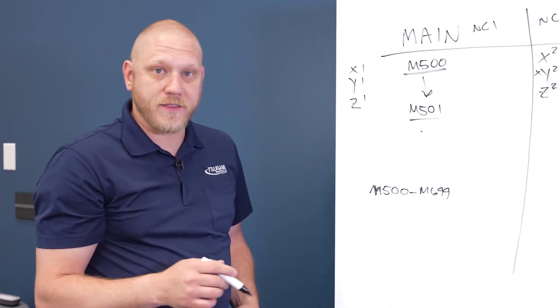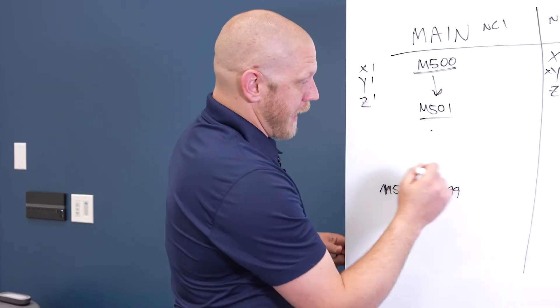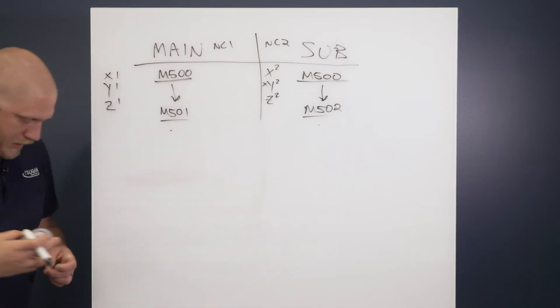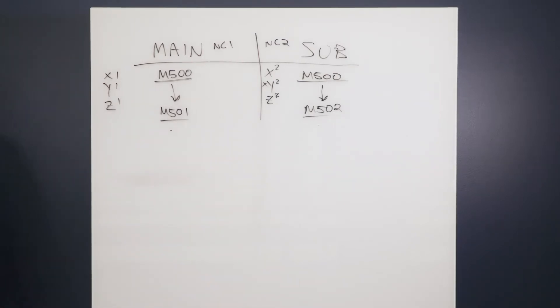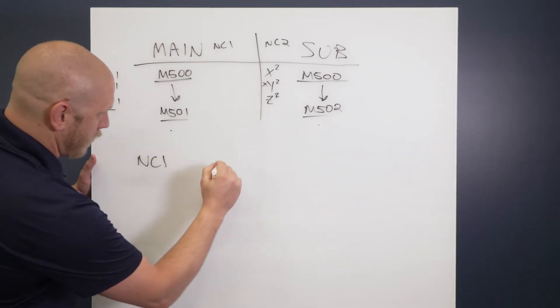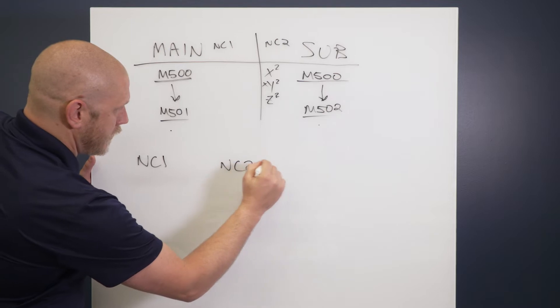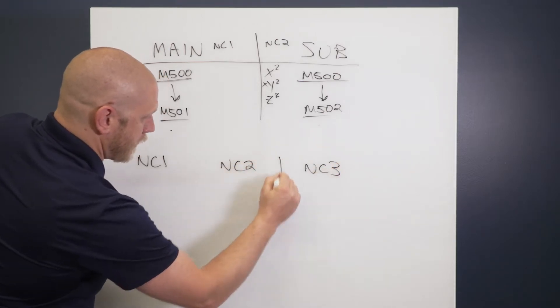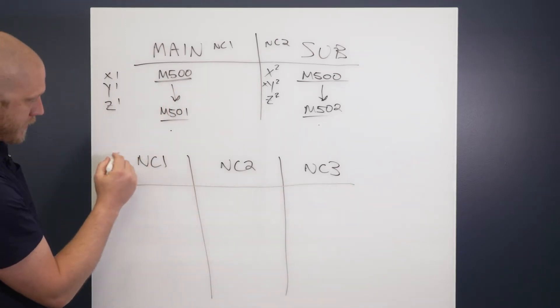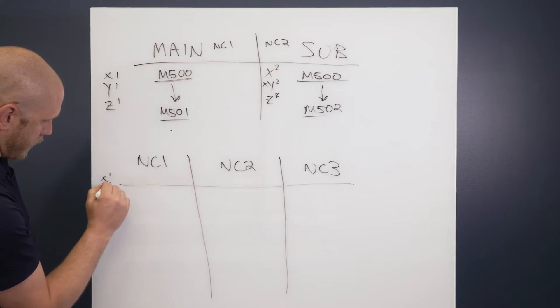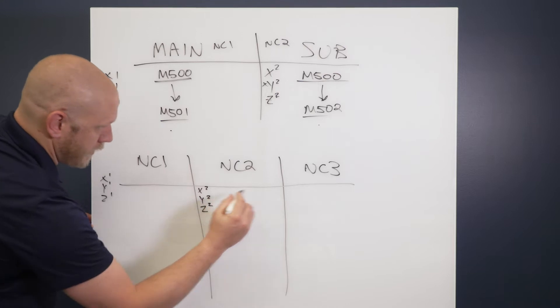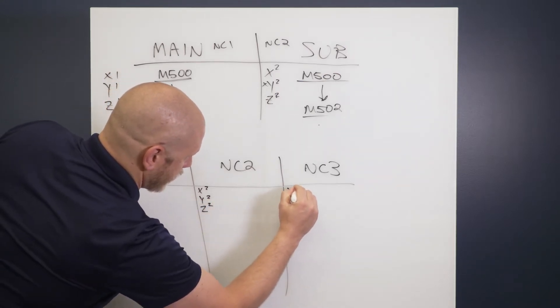Now, when it comes to three path control, we can add another path. So if we go to three path, we'll just draw it a little bit below here. It's slightly more complicated, but we have what we're going to call NC1, and we're going to have NC2 and NC3. One thing I'm going to point out, this is going to be XYZ1, XYZ2, and XYZ3.